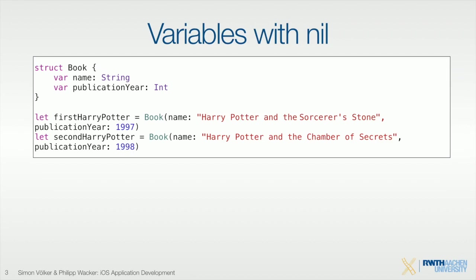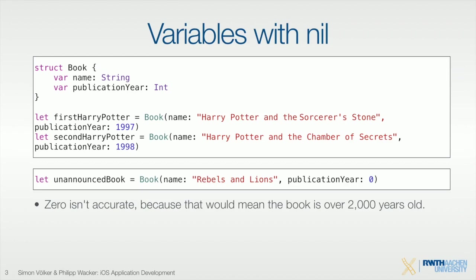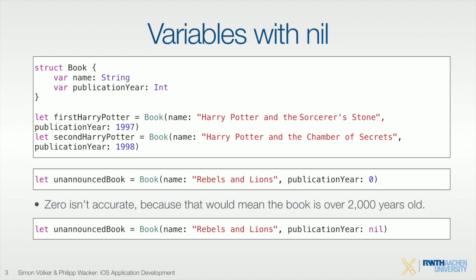For example, here we have a structure which is a book. It has a name and a publication year, and we create two Harry Potter versions. However, if you have a book which is unannounced — will be released — and you want to use it in your structure, you have to initialize it with something, because the value cannot be nil. Zero doesn't make sense here, so we need the concept of a nil pointer option.